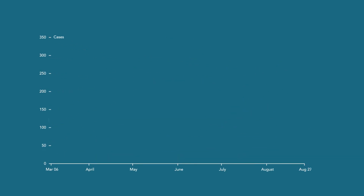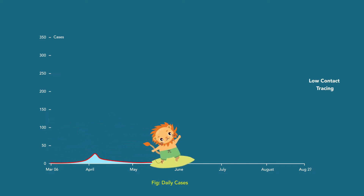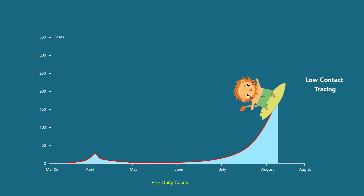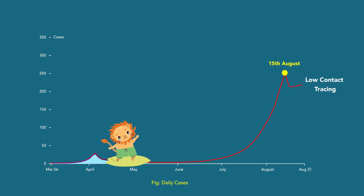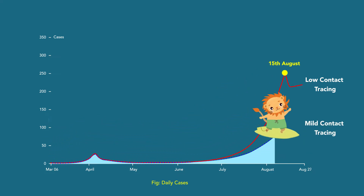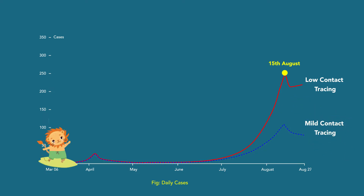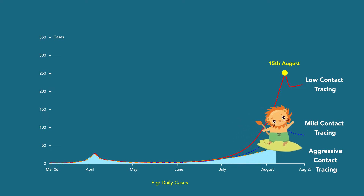Let's recap this again, and our surfer friend is going to join us this time. In short, the plain line represents low contact tracing. The dotted line represents mild contact tracing. And the last dash-dotted line represents aggressive contact tracing. As we can see, during aggressive contact tracing, the wave is down and we have better results.